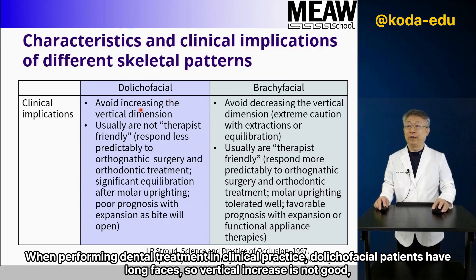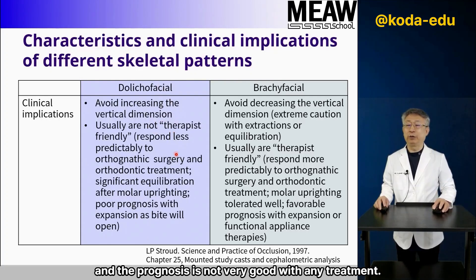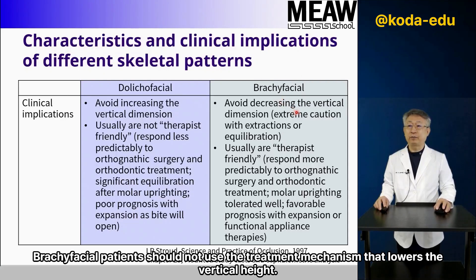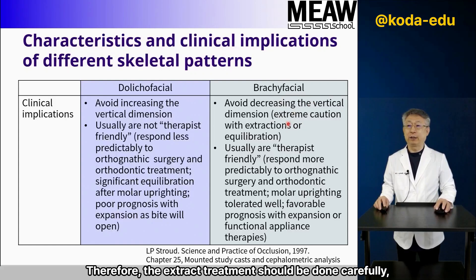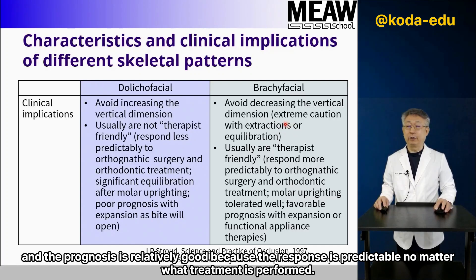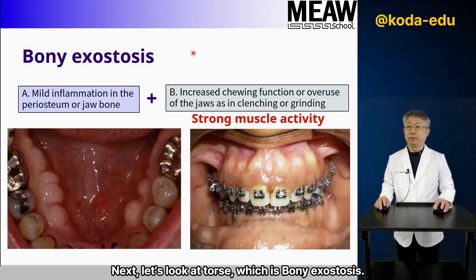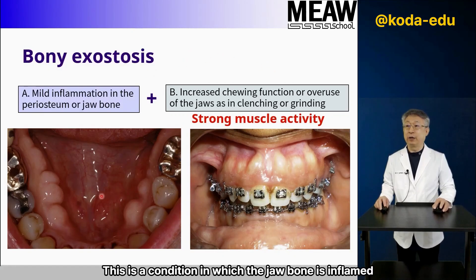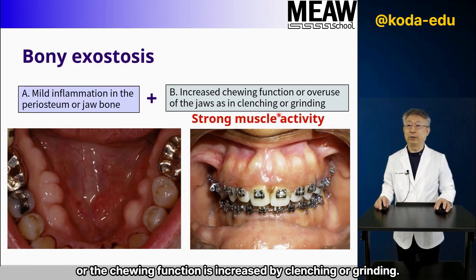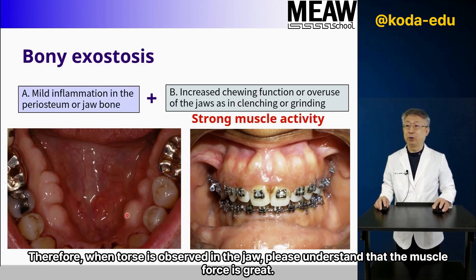When performing dental treatment in clinical practice, dolichofacial patients have long faces, so vertical increase is not good and the prognosis is not very good with any treatment. Brachyfacial patients should not use treatment mechanisms that lower the vertical height; therefore, extraction treatment should be done carefully, and the prognosis is relatively good because the response is predictable. Next, let's look at torus, which is bony exostosis — a condition in which the jaw bone becomes inflamed, or chewing function is increased by clenching or grinding. When torus is observed in the jaw, please understand that the muscle force is great.